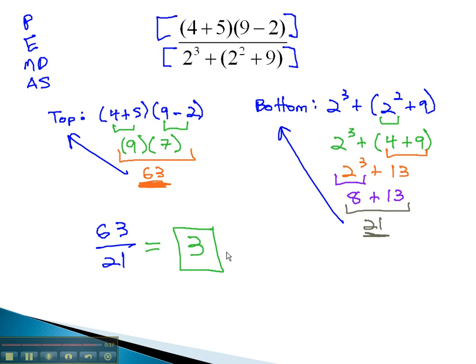By simplifying the numerator and denominator top and bottom separately, then bringing them together and saying, how does this reduce? What does this divide to? We can simplify a very complex looking expression with the order of operations.